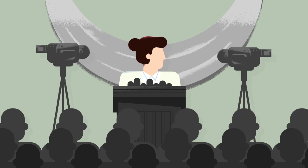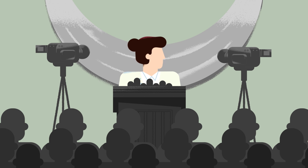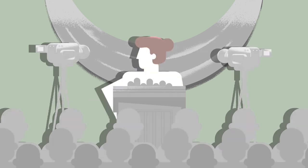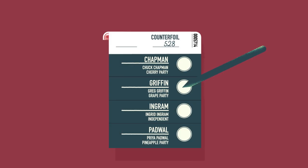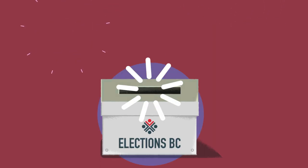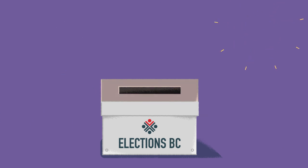During campaigns, parties and candidates share their policies and ideas, called their platform, and work towards gaining public support. Voters choose their candidate by marking their ballot. At the end of the campaign, the votes are counted, and the winning candidates are officially elected.